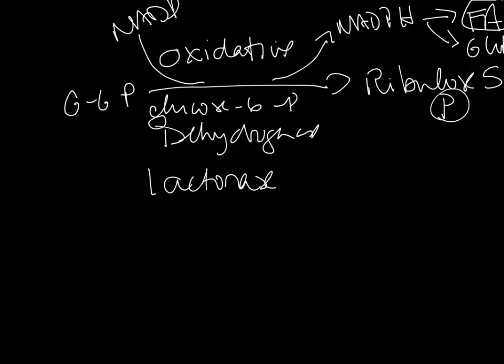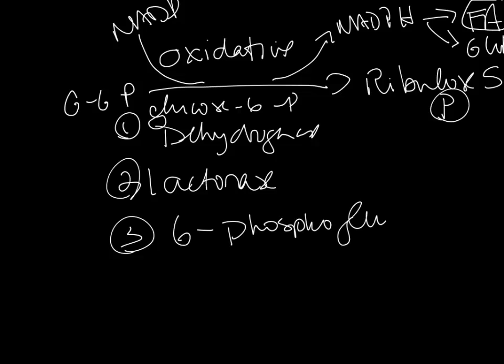That is a hydration reaction that makes 6-phosphogluconate. And finally, the third enzyme is 6-phosphogluconate dehydrogenase. This enzyme also generates NADPH.